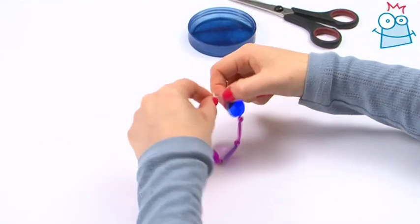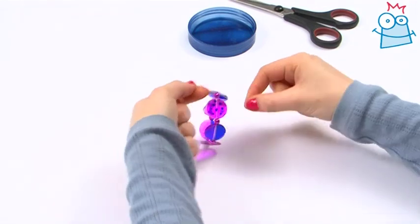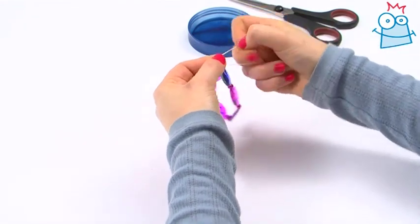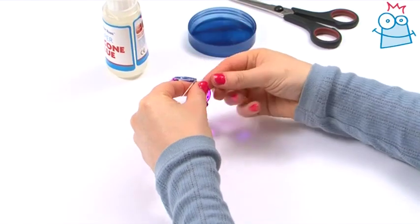Once you get enough beads threaded on, tie the elastic into a double knot, but don't cut the ends yet. Add a dot of silicone glue to the knot and leave to dry.